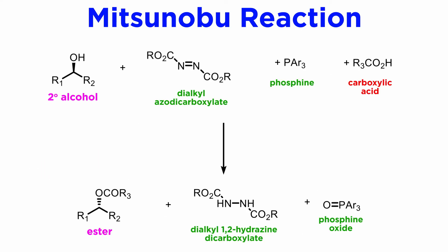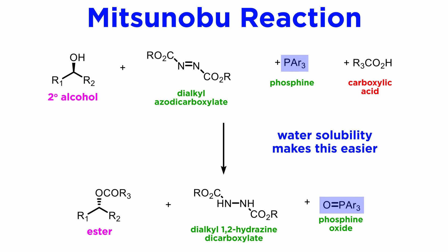This reaction has found thousands of applications, though it has been rightly noted that the amount of waste produced is enormous. In particular, the phosphine oxide has a rather high molecular weight and is very difficult to separate from the product. From a practical standpoint, many authors have employed a water-soluble ionizable phosphine, which forms a water-soluble oxide, easily removed using basic or acidic aqueous washes.